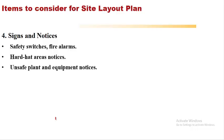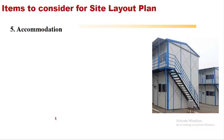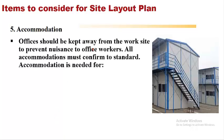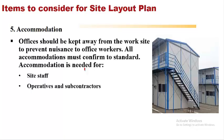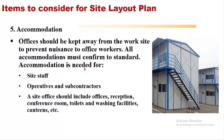Offices and accommodation — the fifth point to keep in mind for site layout. Offices should be kept away from the work site to prevent nuisance to office workers. All accommodations must conform to standard. Accommodation is needed for site staff, operatives, and subcontractors. A site office should include offices, reception, conference rooms, toilets and washroom facilities, and canteens, etc.